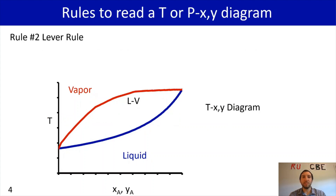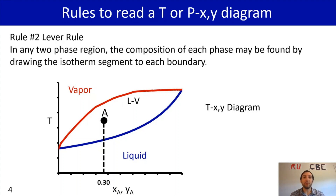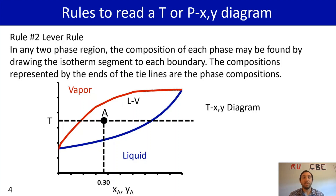Rule number two is the lever rule. Let's say I have mixture A that has a composition of 30 mole percent toluene in a benzene-toluene system. The composition of each phase can be found by drawing an isotherm segment to each boundary. At the point where the isotherm intersects with the vapor curve, that's point B. Where the liquid curve intersects with the isotherm, that's point C.